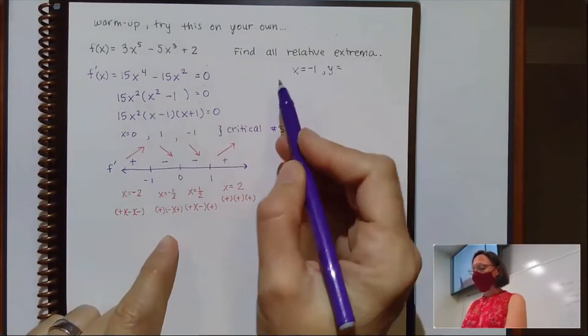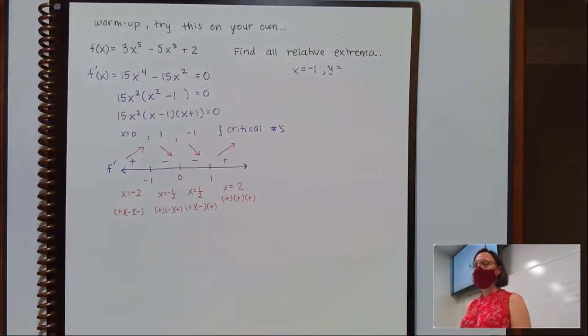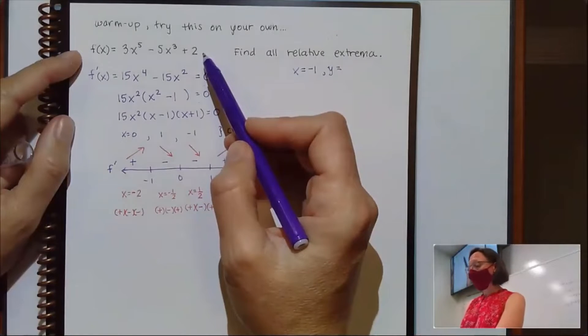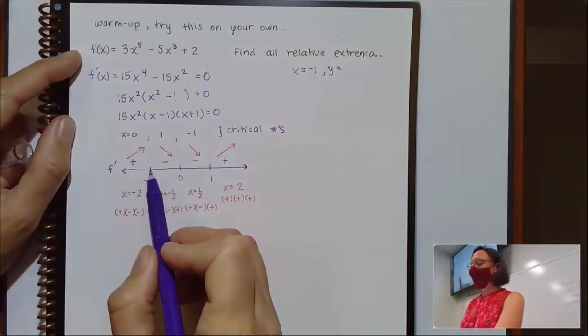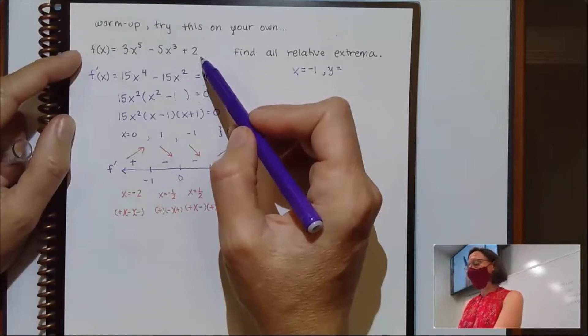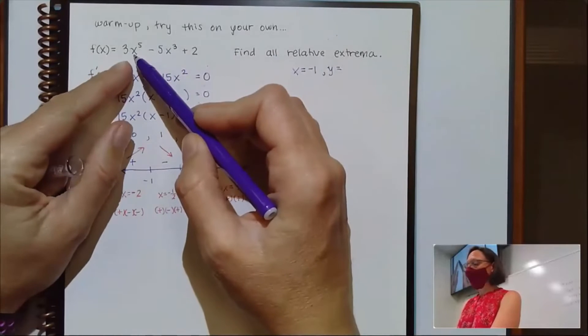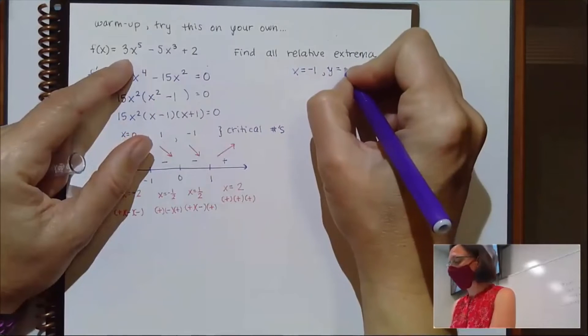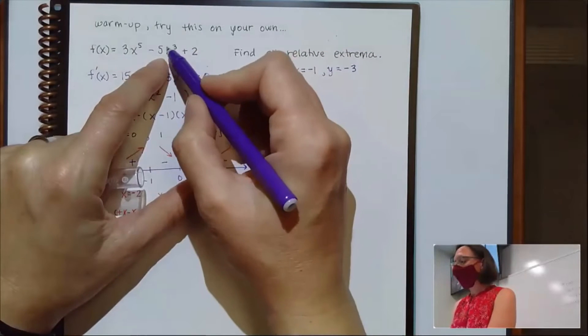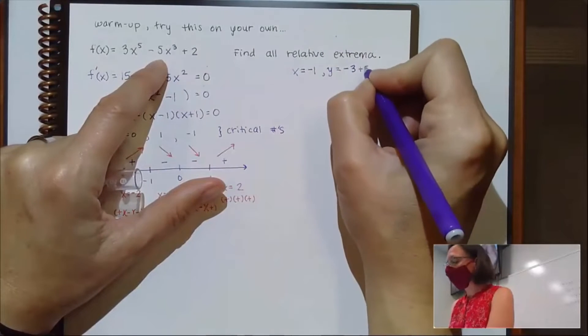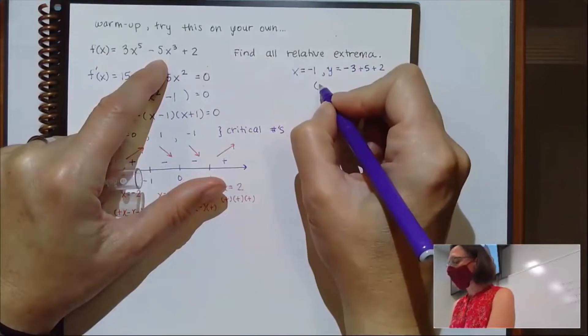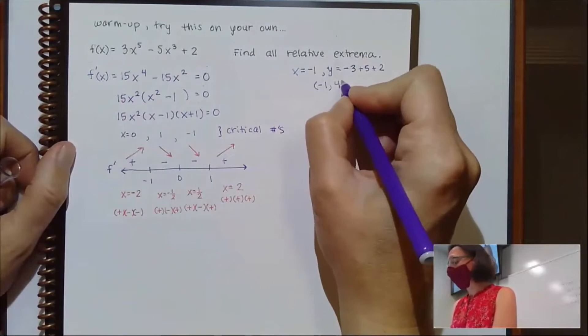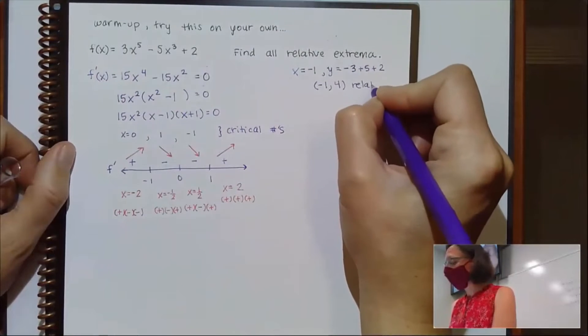So to get the y value when x is negative 1 and actually give that coordinate, I have to go back to the original function. I know that if I plug in negative 1 to the derivative, I get 0. But when I plug in negative 1 to the original function, if I plug in negative 1, negative 1 to the fifth is negative. So I'm at negative 3. That'll be a negative 1, but then times negative 5, so plus 5 and plus 2. So I think my coordinate there would be negative 1, 4.